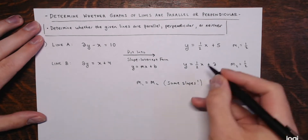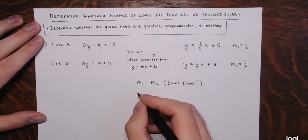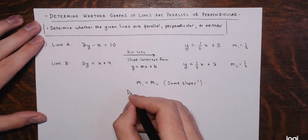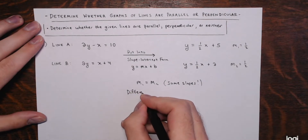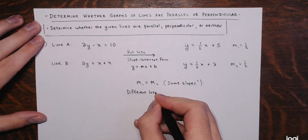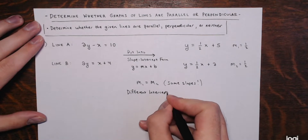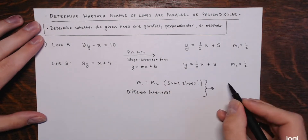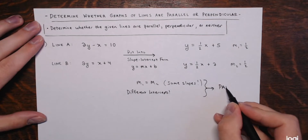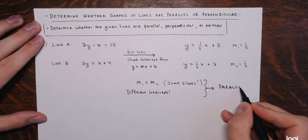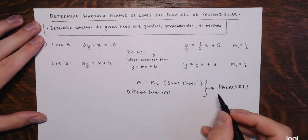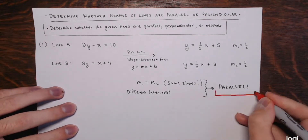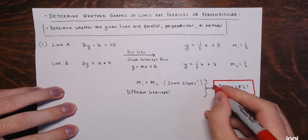The y-intercept for line A is 5 and the y-intercept for line B is 2 — they have different intercepts. Putting both together, that means these lines are parallel. They run in the same direction and they never touch each other, never intersect.